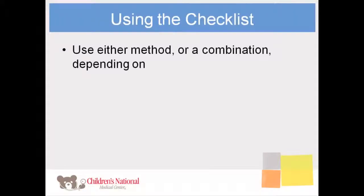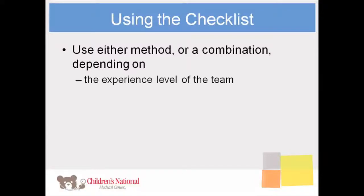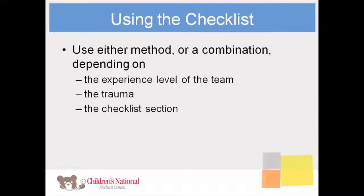Again, you may choose which method you use to implement the checklist in a trauma resuscitation. You may even use a different method for different sections of the checklist within the same resuscitation. When choosing a method, you might find that the experience level of your team affects which method you choose. For example, with a less experienced team, the do list method done in real time may be better than the challenge response method. In some cases, the circumstances of the trauma resuscitation may make one method preferable over the other. You might also find that one method is better suited for certain sections of the checklist, or you may find that you have a personal preference. Whichever method you use, it is important to remember to state the items on the checklist out loud.